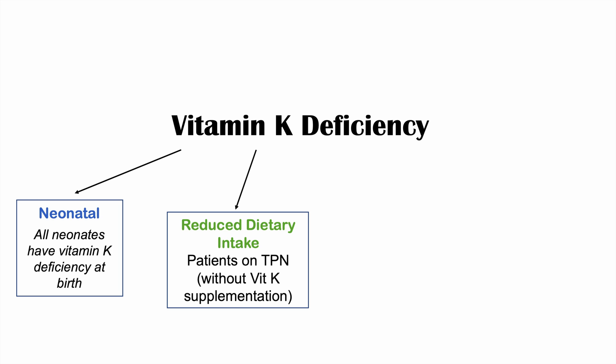Another cause is reduced dietary intake — if you're not eating enough leafy greens and vegetables like Brussels sprouts and spinach, you may be deficient. More specifically, we see this in patients on TPN or total parenteral nutrition where vitamin K supplementation is not included. Malabsorption processes such as inflammatory bowel disease — Crohn's and ulcerative colitis — can also lead to decreased absorption of fat-soluble vitamins like vitamin K, as can certain gastrointestinal surgeries.